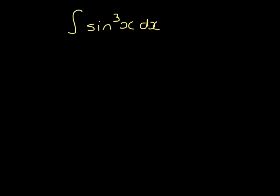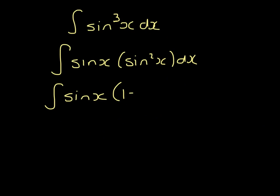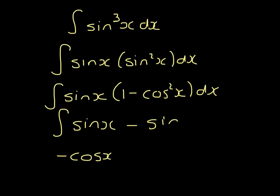Integrating sine cubed x, I'm going to rewrite this as sine x times sine squared x. And then I'm going to replace the sine squared x by 1 minus cos squared x. So I'm integrating sine x, which becomes minus cos x. And I'm integrating minus sine x, cos squared x.